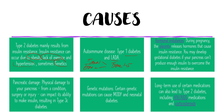Hormonal imbalances, for example during pregnancy, the placenta releases hormones that cause insulin resistance, leading to gestational diabetes. Pancreatic damage, which occurs as a result of a physical insult due to surgery or injury, can impact the ability of the pancreas to produce insulin — this is also known as type 3C diabetes. Genetic mutations like HNF-alpha can lead to maturity onset diabetes of the young and neonatal diabetes. Long-term use of certain medications like HIV-AIDS medications and corticosteroids can also lead to diabetes.